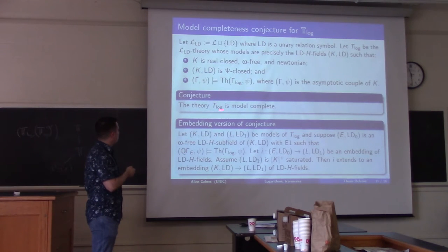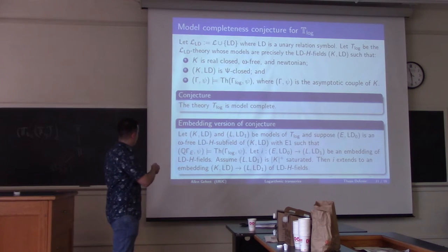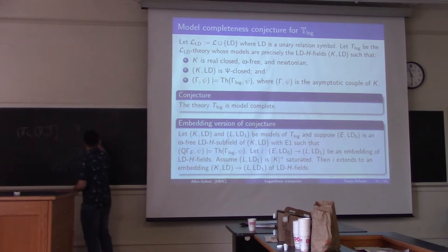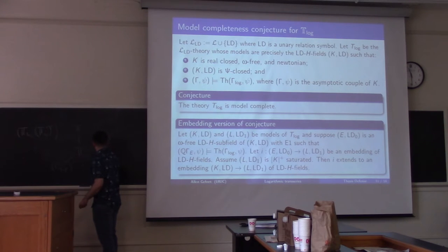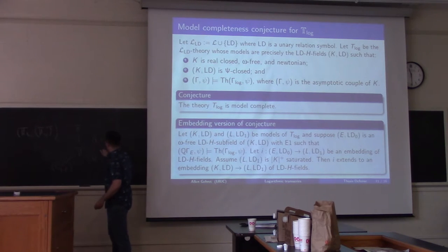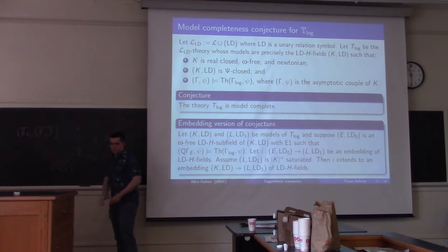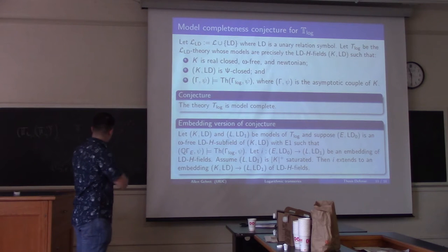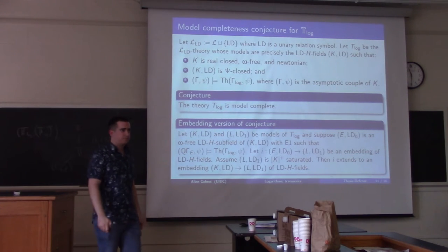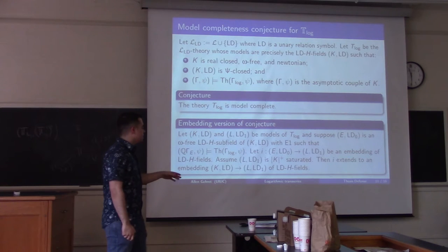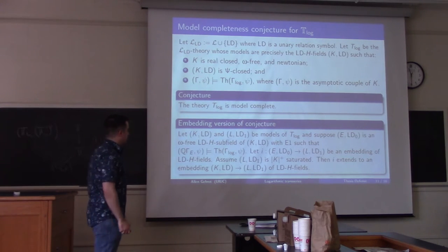What I said before is that in T-log, the daggers and its complement are both existentially definable. So if T_log is model complete, we actually didn't need LD in the language — the version of T_log within just the language L would also be model complete. To prove model completeness, we need to develop an extension theory for LDH fields, and for this reason I want to keep the LD set around. This is essentially the content of Chapter 7: studying LDH fields.